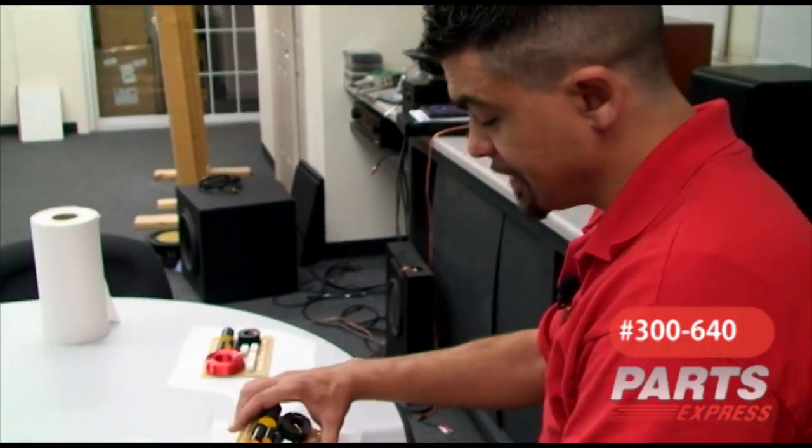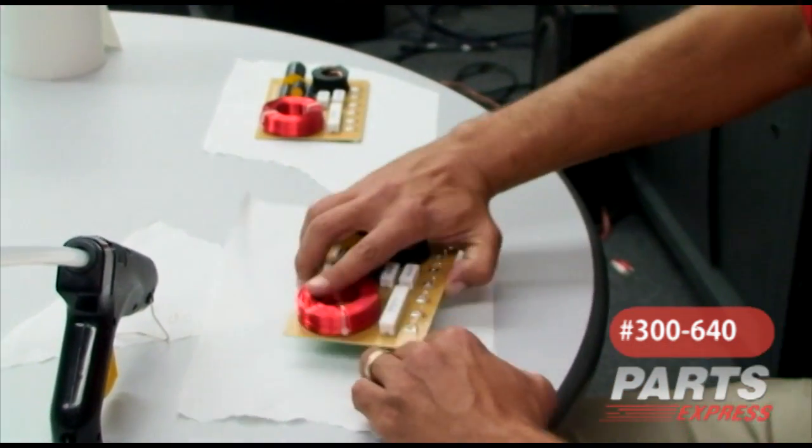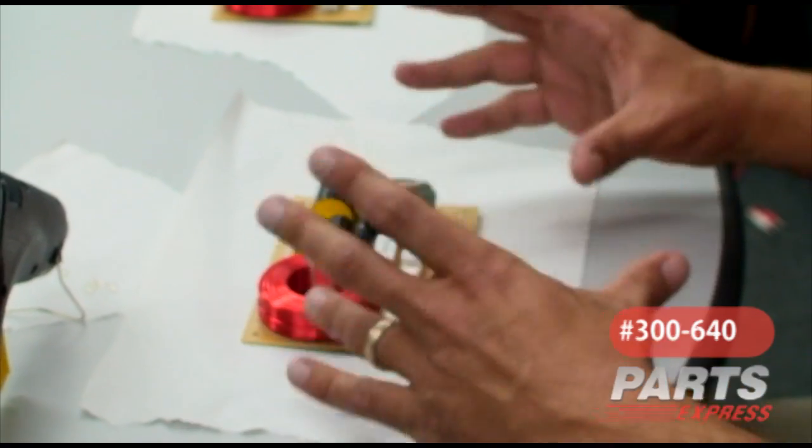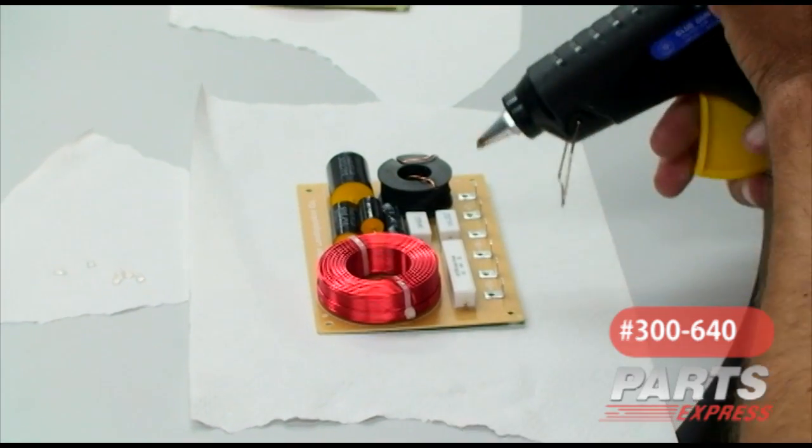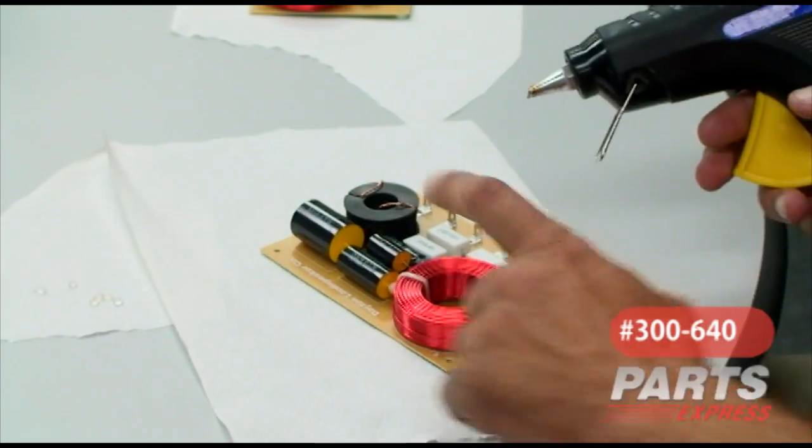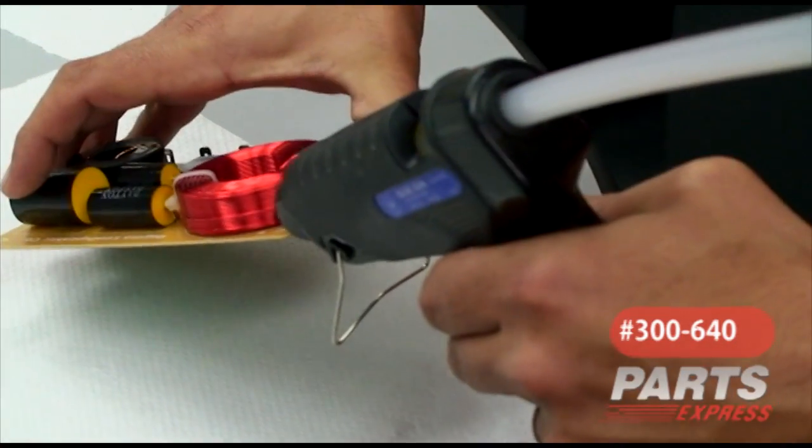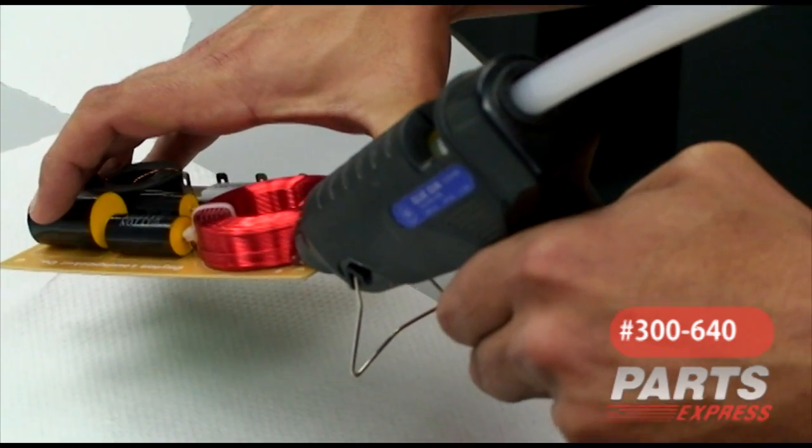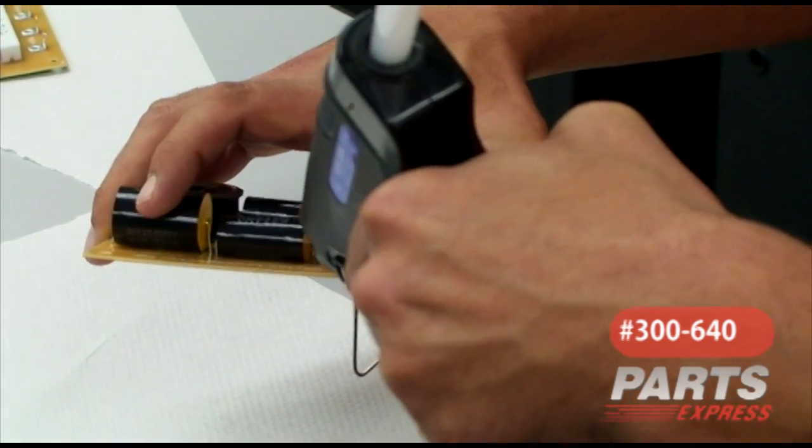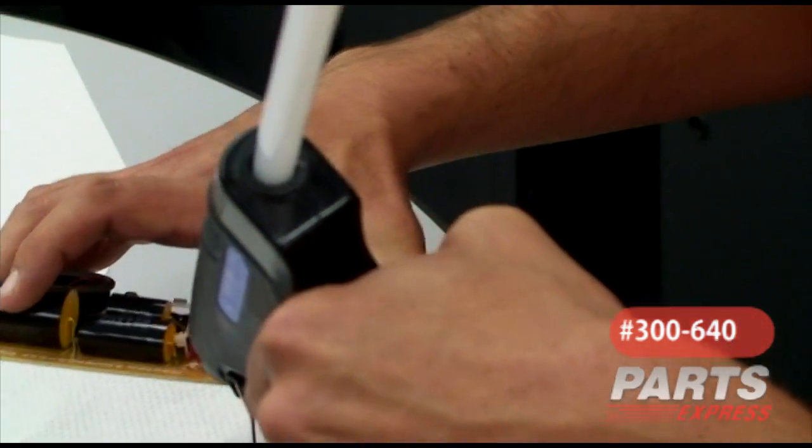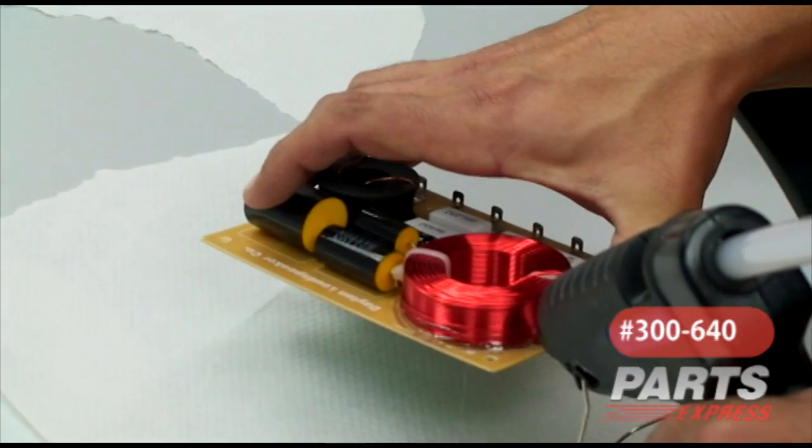So now that you've got your crossover assembled, what you're going to notice is that there's nothing holding these in place except for the soldering connections on the back. What you want to do to ensure that these are not moving around inside of the speaker is to use some hot glue just to secure them to the board. The most important part is going to be this large inductor. It's going to want to move around as much as possible. So what you've got to do is just come up and give it a nice solid bead in between the bottom of the inductor and the actual printed circuit board. Even if it looks ugly, you can always come back and scrape it off after it's dried. Make sure not to get it on your fingers because this is hot and it will burn.